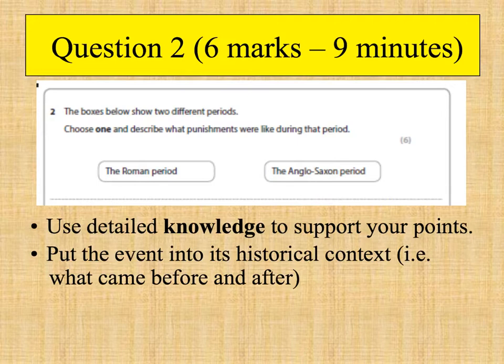For example, if you were writing about prison reformer John Howard from the 18th century, you might talk about how he influenced other prison reformers such as Elizabeth Fry.